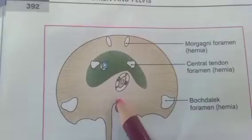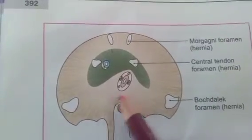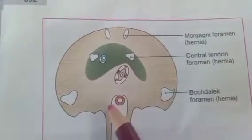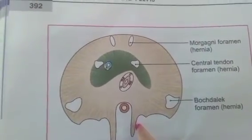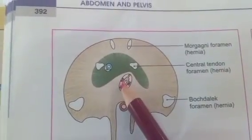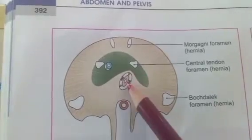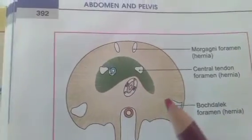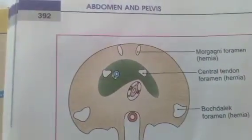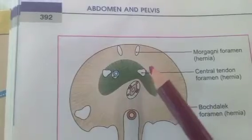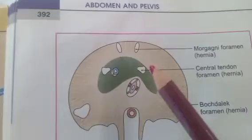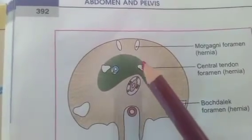The posterior hernia is due to failure of development of the posterior part of the diaphragm. One or both crura may be absent, and the aorta and esophagus both lie in a gap, but there is no actual hernial sac. The central hernia is very rare, most commonly left-sided, and results from rupture of the fetal membranous diaphragm in the region of the left dome.